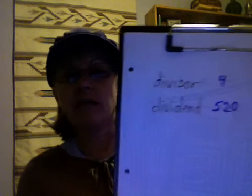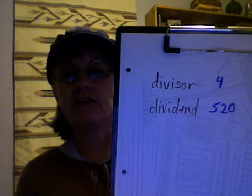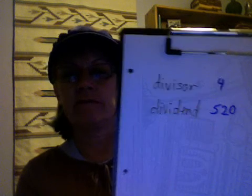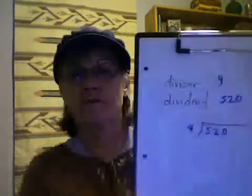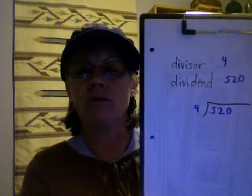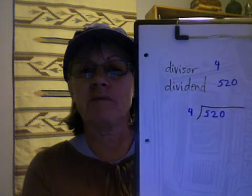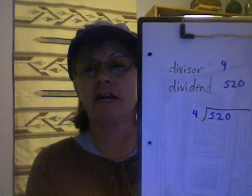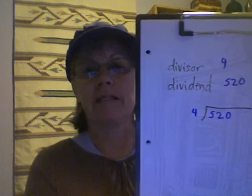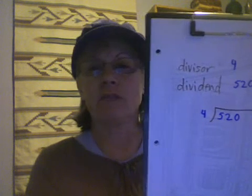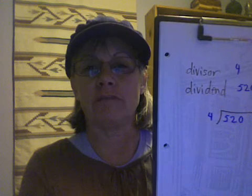We've got one problem left for today. It will use a divisor of 4 and a dividend of 520. Correctly set up to solve, it's going to look like this. Sometimes we say, what's the quotient for the problem of 520 divided by 4? That's what you will be solving for. The quotient is the answer for a division problem.